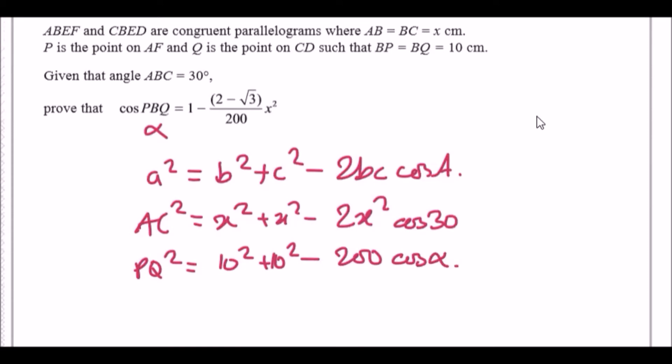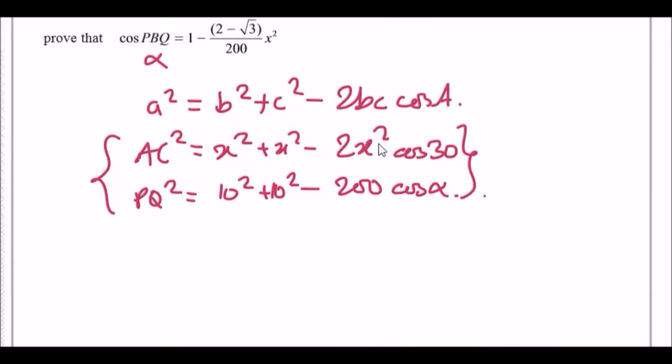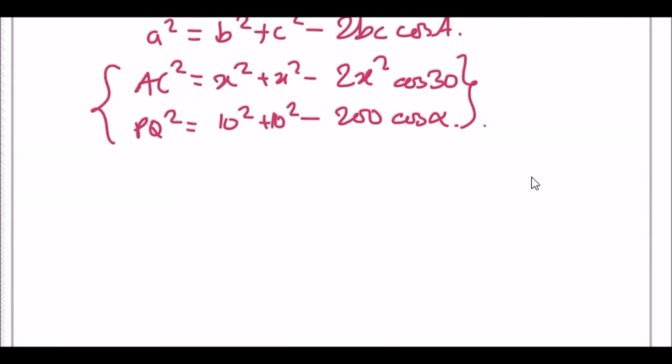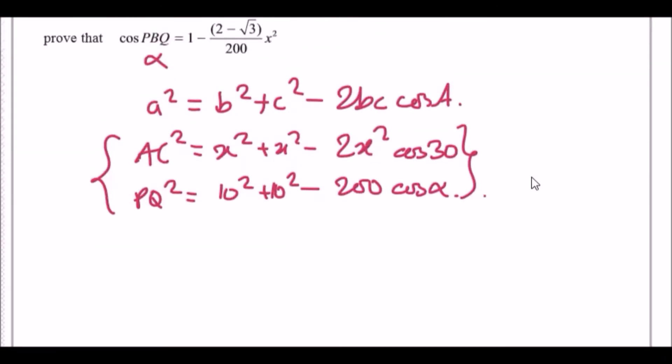And there we go guys, here are our two equations we're going to work with. Now because we know that these two, AC and PQ, are equal, of course the squares will be equal too. This means that these two equations are equal to each other.